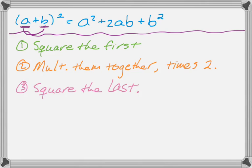So we end up with square the first, so that'll give us a squared. Multiply them together as ab times 2, so that's 2ab. And then square the last, b squared. And then add those all together. So let's do a couple practice problems and see.